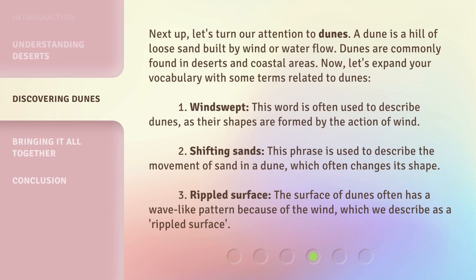Next up, let's turn our attention to dunes. A dune is a hill of loose sand built by wind or water flow. Dunes are commonly found in deserts and coastal areas. Now, let's expand your vocabulary with some terms related to dunes.